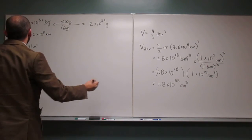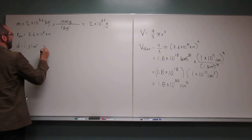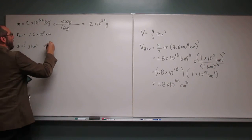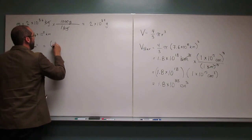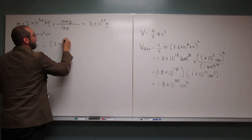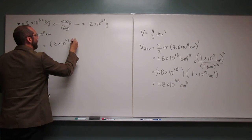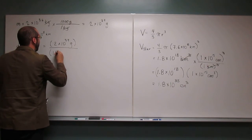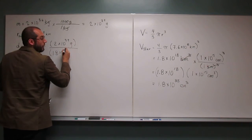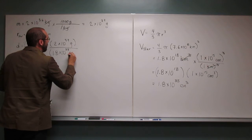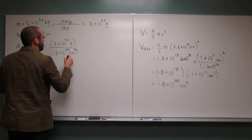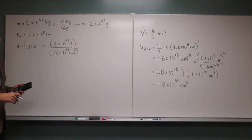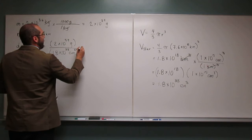So we've got grams, we've got centimeters cubed, so let's figure out the density. Density is grams per centimeters cubed, so 2 times 10 to the 39th grams divided by 1.8 times 10 to the 33rd centimeters cubed. So hopefully everybody sees we have the right units there, grams per centimeters cubed, and now we just plug and check.